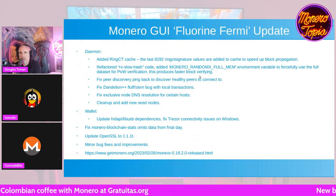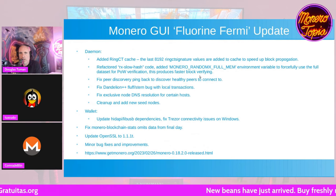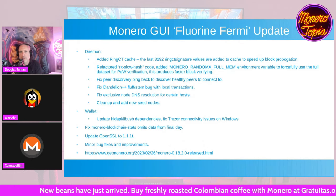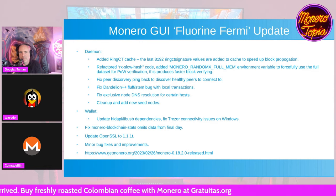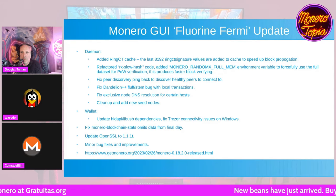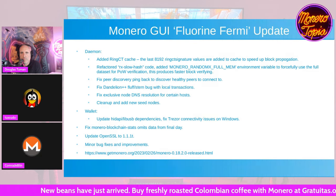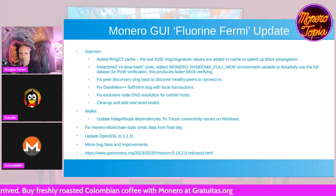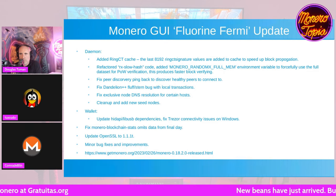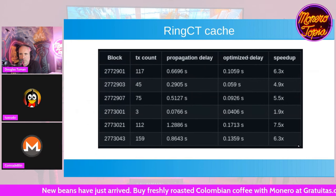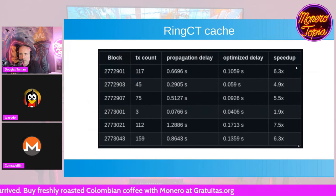We'd love to get Tevedor back on the show at some point — he does the most complicated updates and it's kind of his repo. So, Fluorine for me GUI updates: the daemon improved the ring CT cache. The last 8,192 ring CT signatures are now cached, which speeds up block propagation. Here's a bit of a feature showing without the ring CT update versus with it.